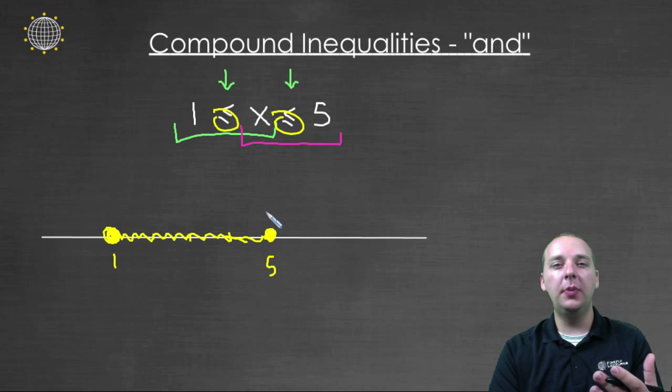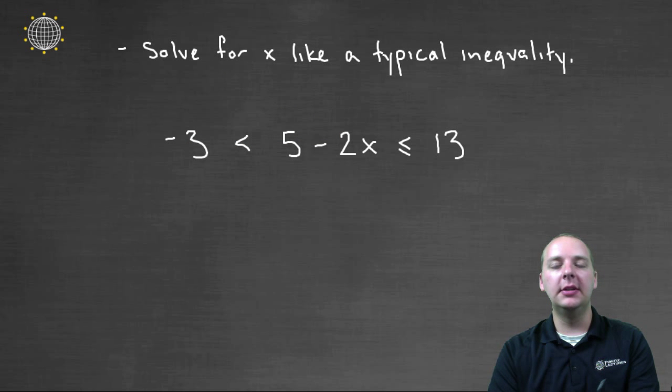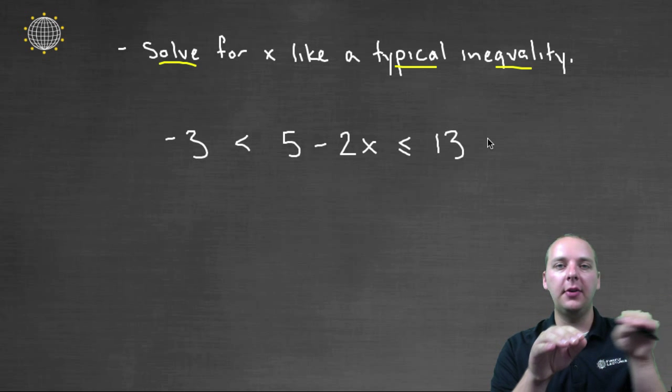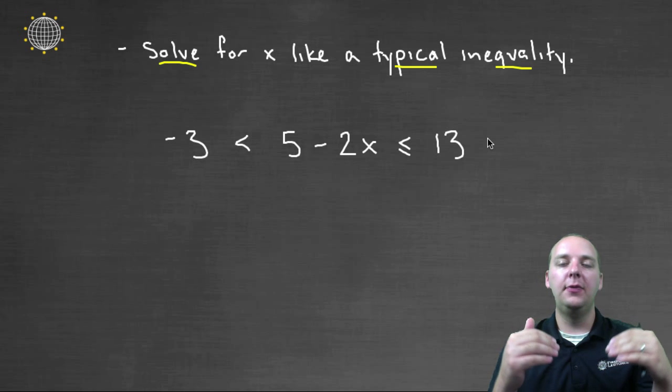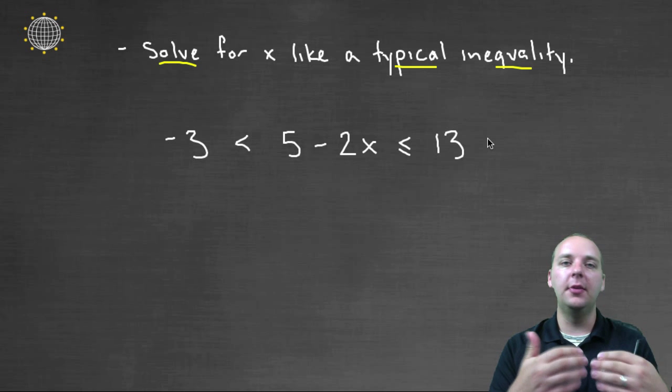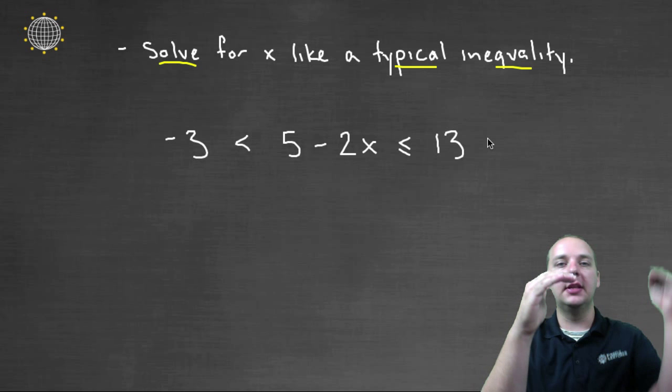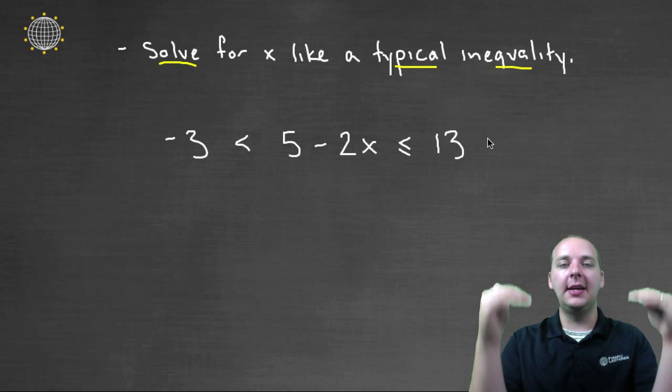Now typically they're going to be a little bit more challenging than this. There's usually some algebra you have to do. But the good news is that we can solve these guys just like any typical inequality. The only difference is now that there's three pieces: there's a left, a middle, and a right. If you want to increase the middle by a certain number, you also have to increase the left and the right by that same number.